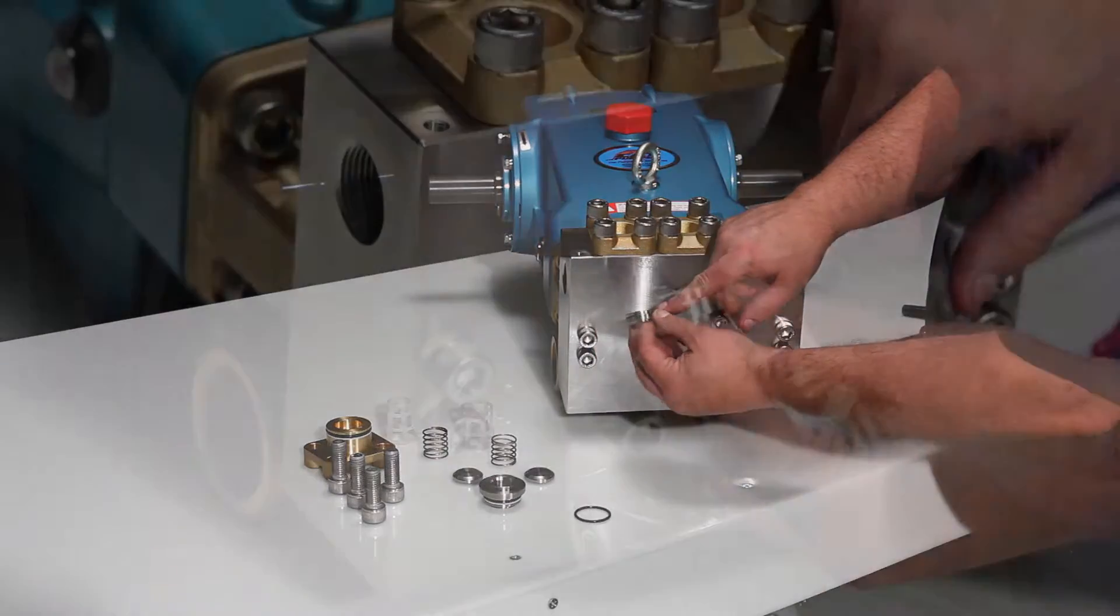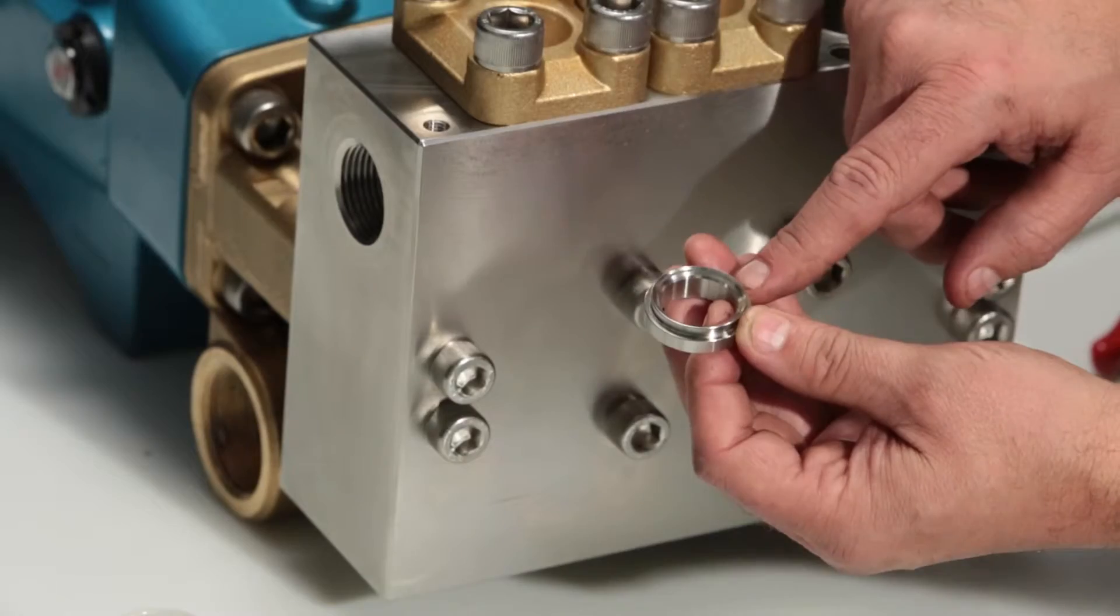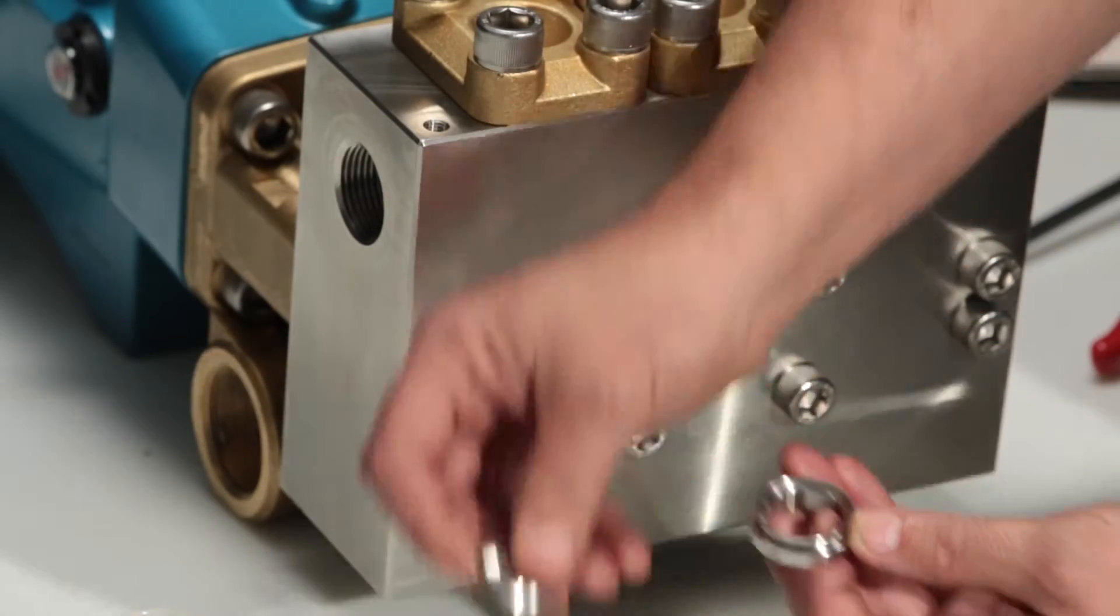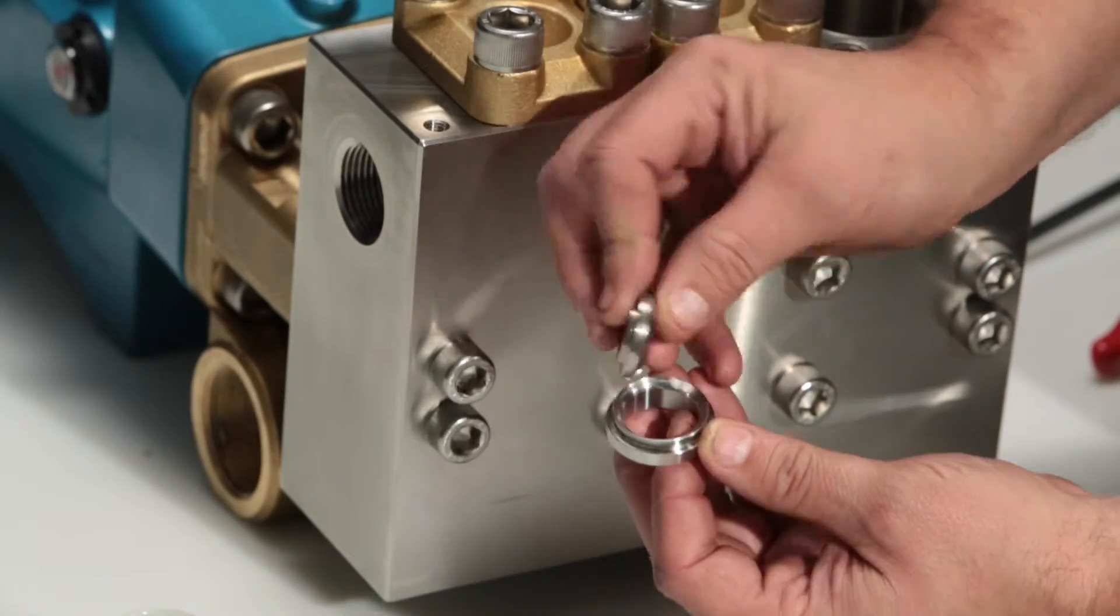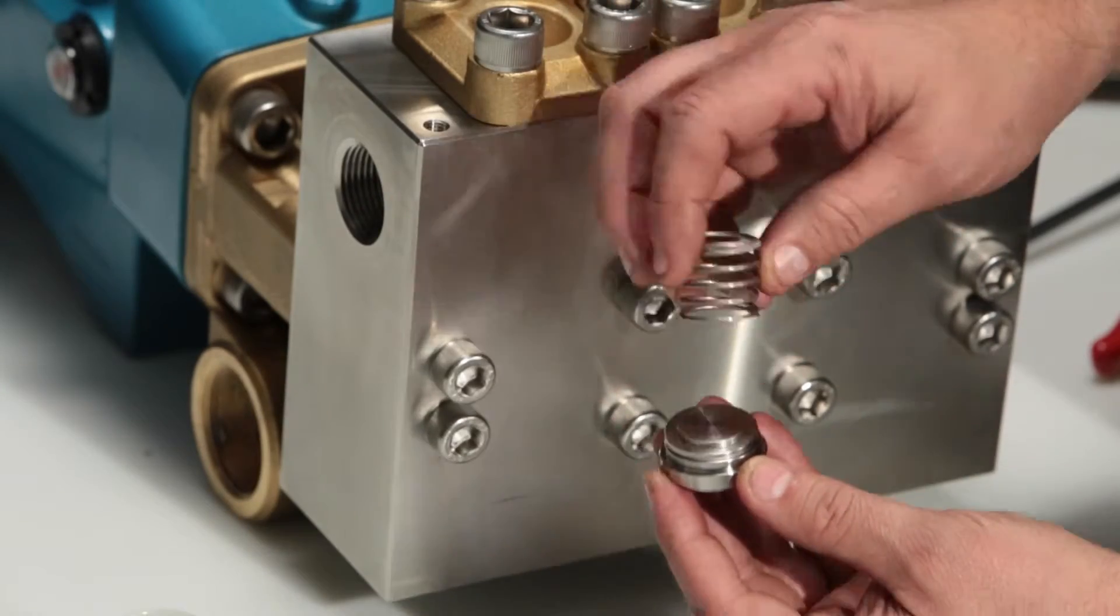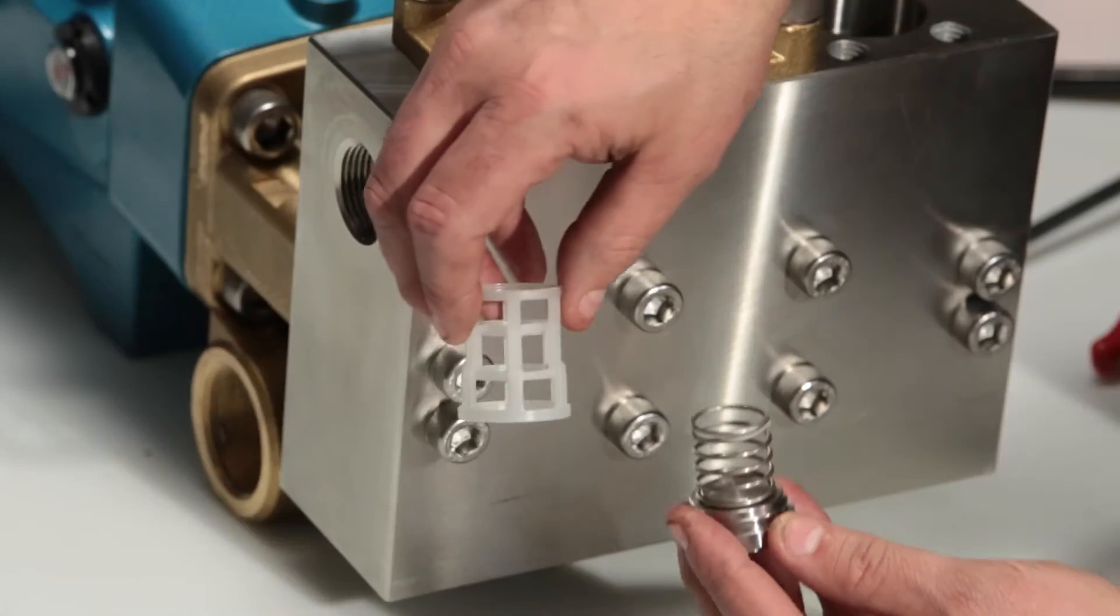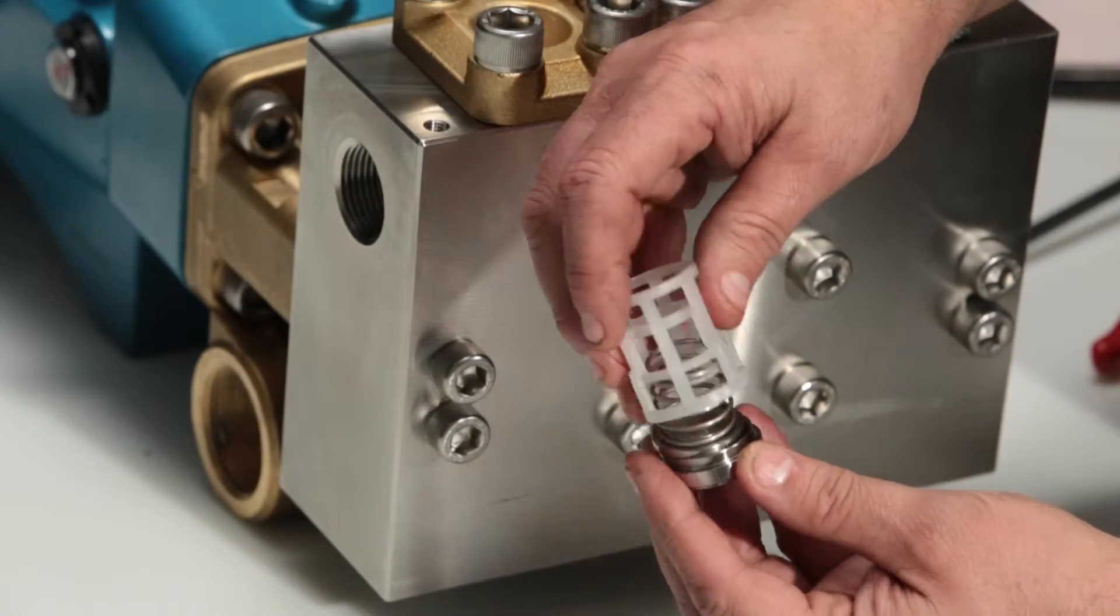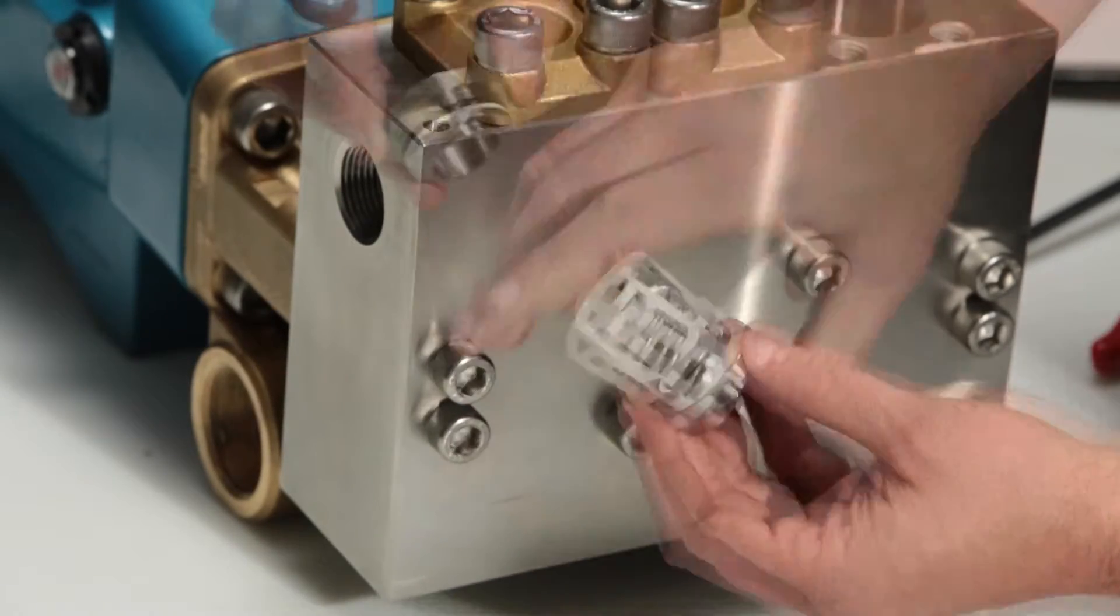To reassemble the valve, take the inlet valve seat, then the valve, then spring. The inlet valve retainer has only one step, opposed to the discharge, which has two.